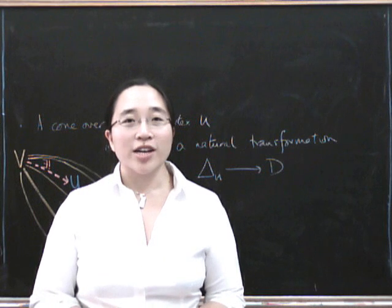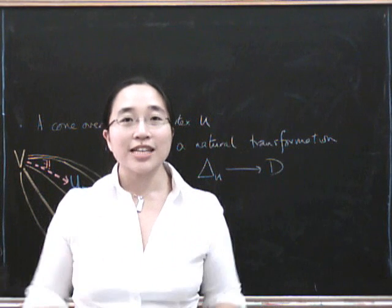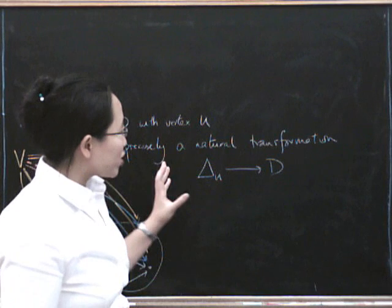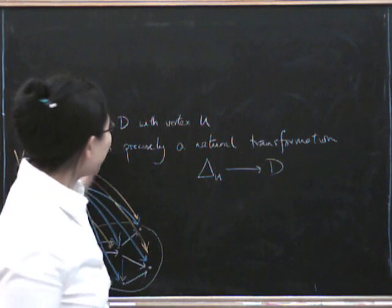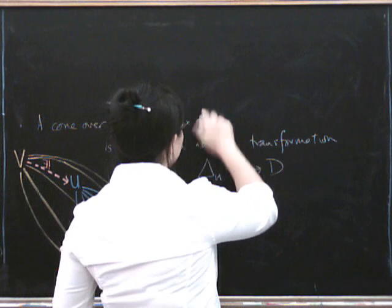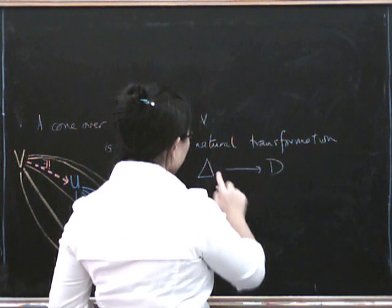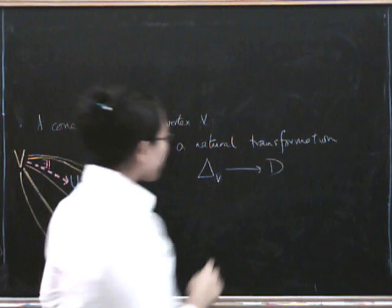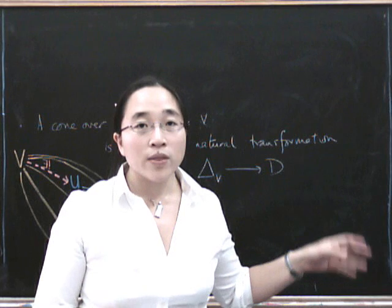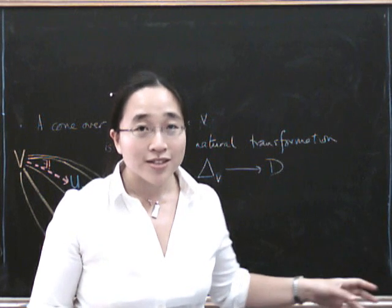Right, now what we're going to do is give the completely formal definition of limit. Now that we've got this completely formal definition of cone, remember that a cone over D with vertex—I'm going to change this to V now because we're interested in general cones—is a natural transformation from this functor to D. And what we're looking for is one that's universal among all of those things.